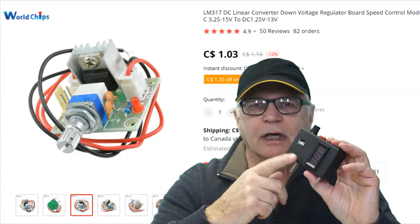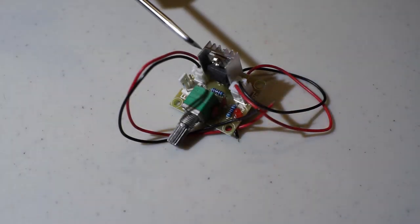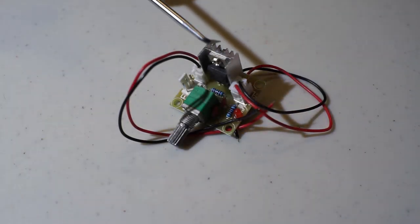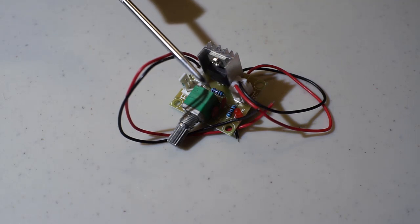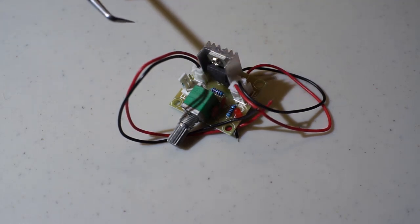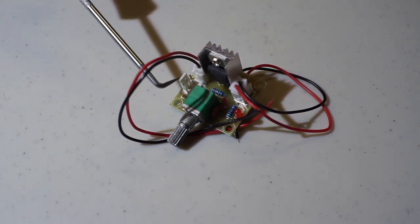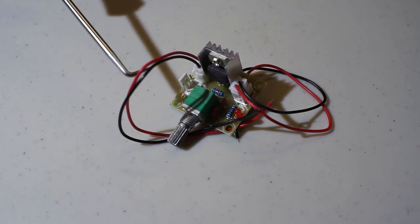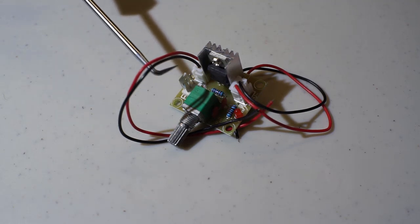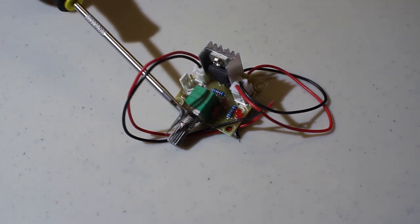Let's have a closer look at what's inside of here: LM317 voltage regulator, the heat sink, all the supporting capacitors and resistors, the potentiometer, all soldered on the board. One dollar, another dollar for shipping.